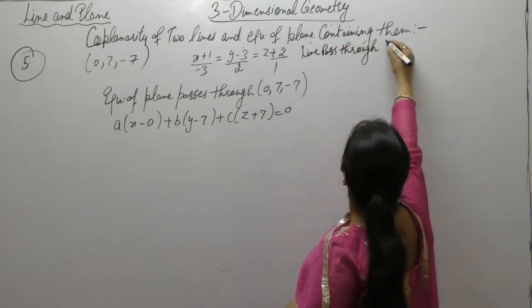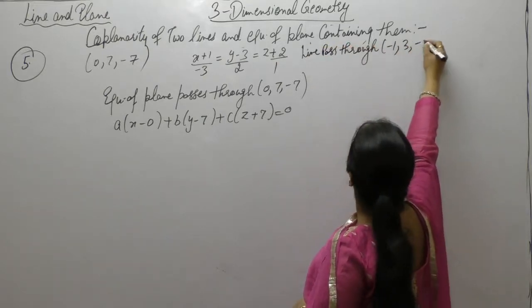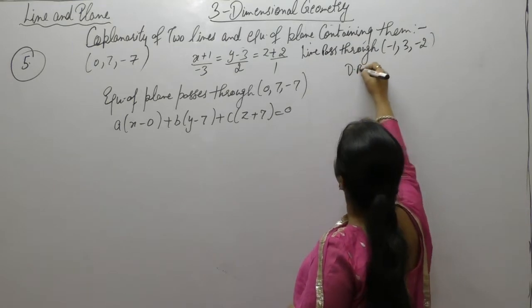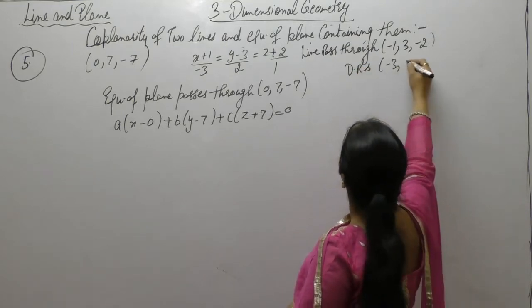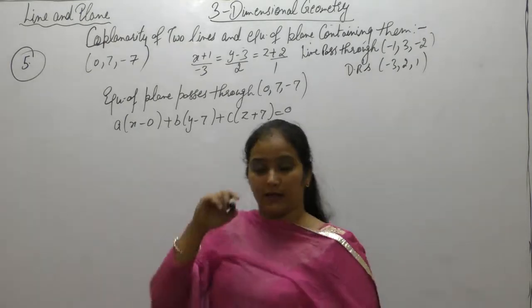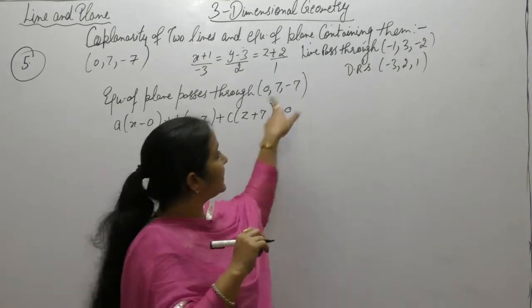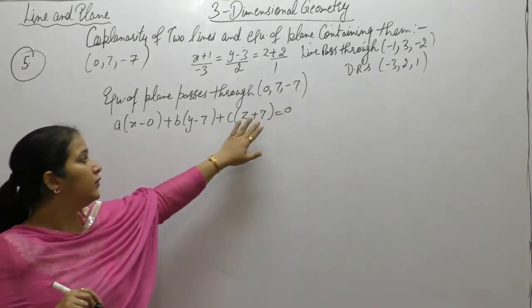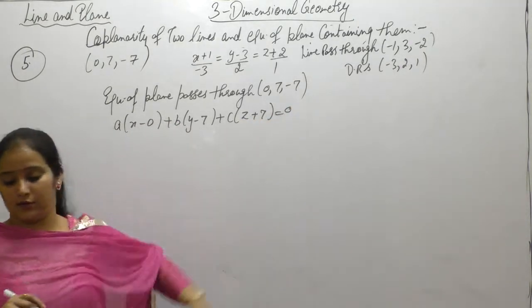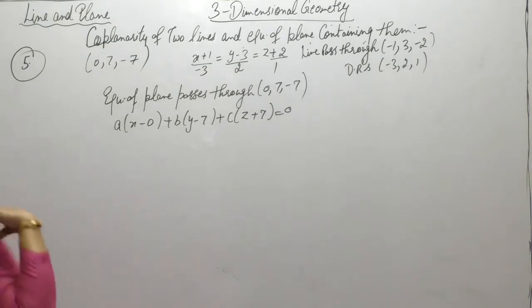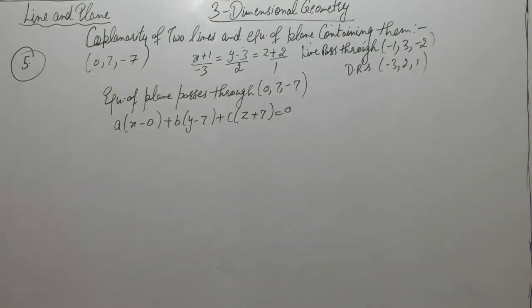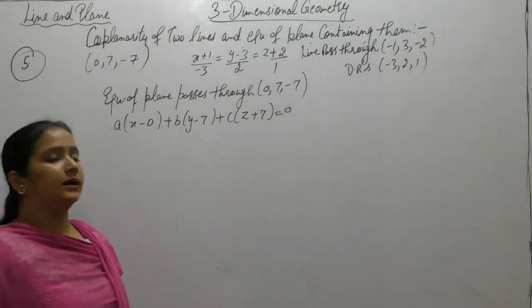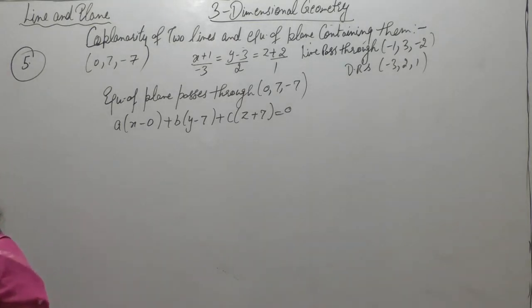A line passes through minus 1, 3, minus 2 and has direction ratios minus 3, 2, 1. If the equation of plane contains this line, it means a point of this line will also be a point of the plane. So the given line passes through the point minus 1, 3, minus 2, and its direction ratios are minus 3, 2, 1.